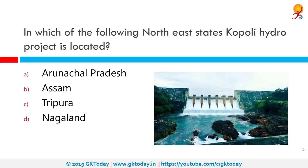In which Northeast state is the Kopili Hydro Project located? It is located in Assam. The Kopili Hydro Project is a 275-megawatt hydroelectric power project on the Kopili River, a tributary of the Umrong stream. It is located in Dima Hasao district of Assam and is operated by the Northeastern Electric Power Corporation Limited.